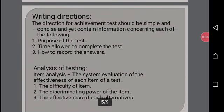Writing directions. The directions for achievement tests should be simple and concise, yet contain information concerning each of the following: purpose of the test, time allowed to complete the test, and how to record the answers.